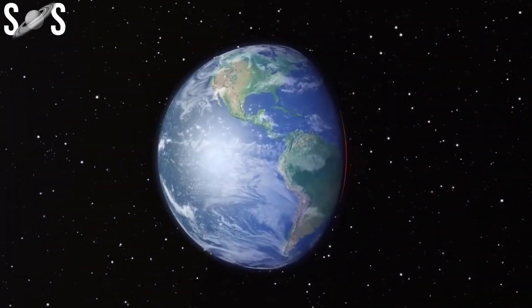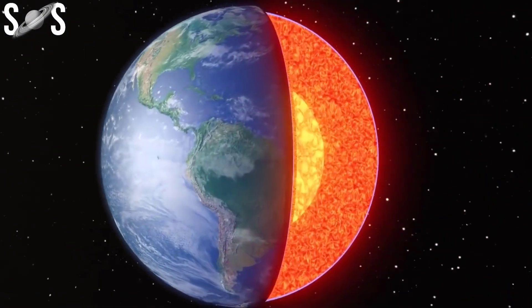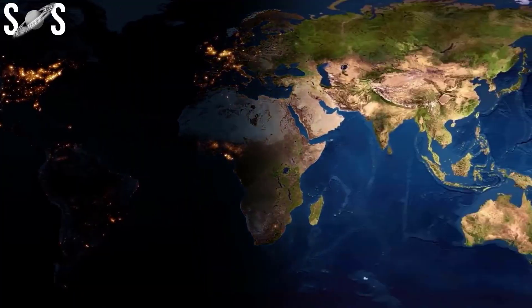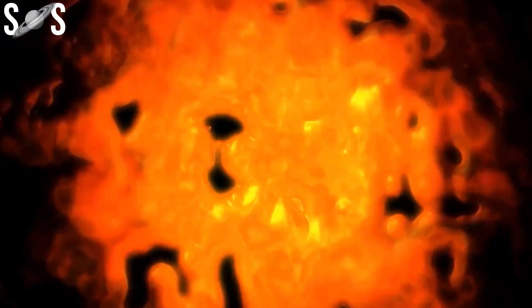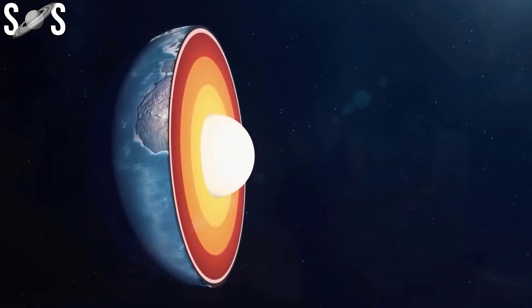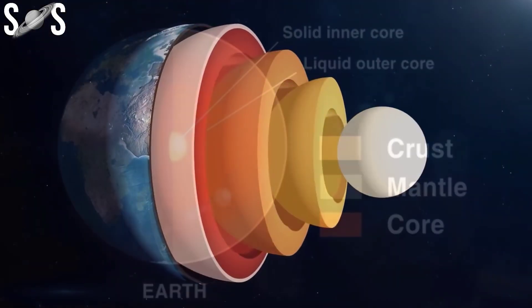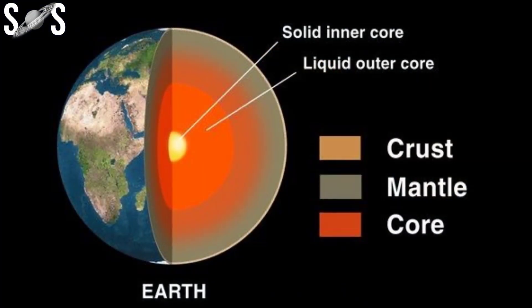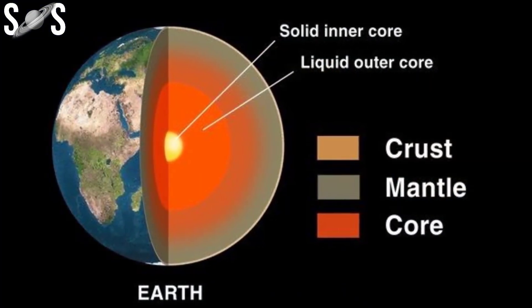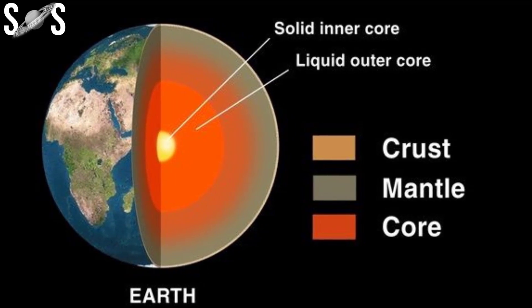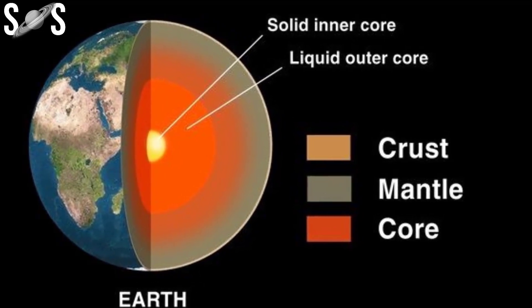Earth's solid inner core, a hot iron ball, has stopped spinning faster than the planet's surface and might now be rotating slower than it. The Earth's core is roughly 5,000 kilometers, 3,100 miles, below the surface we live on. This planet within the planet can spin independently because it floats in the liquid metal outer core.